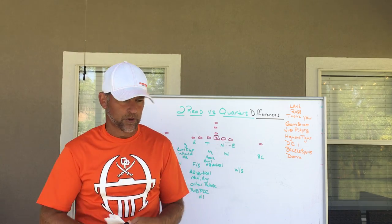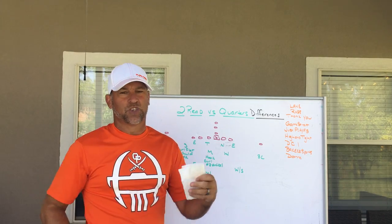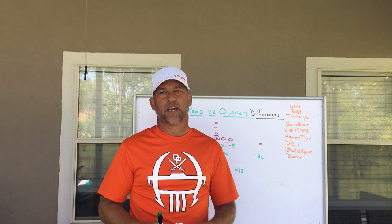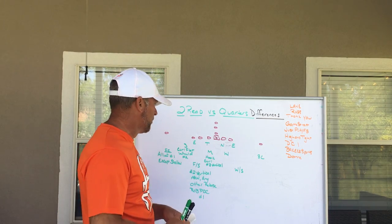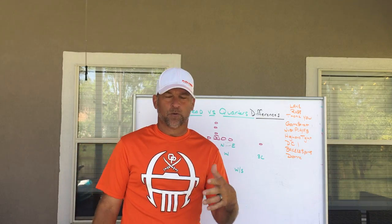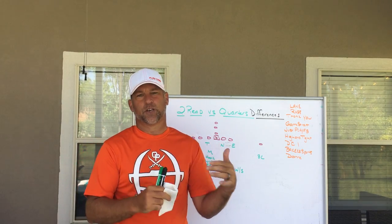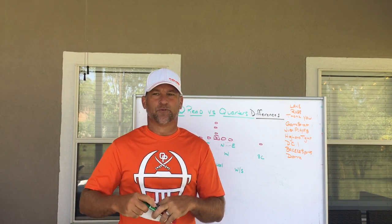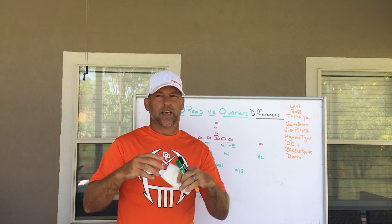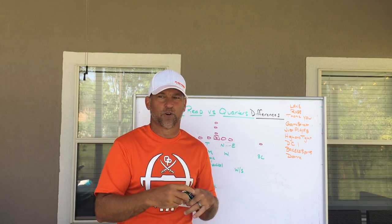Two-read is a variation or an adaptation to quarters coverage that helps you handle certain scenarios. Quarters coverage is a way to get two safeties involved in the run game — a way to get a nine-man front, or nine guys tied into the run game for extra numbers. But what a lot of people don't always understand is that quarters coverage was also developed for two very particular reasons. Number one: when teams ran a lot of option football and run game, teams wanted to find a way to get an extra guy in the box.